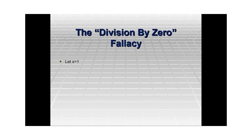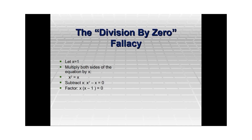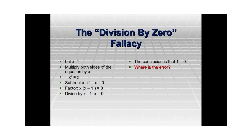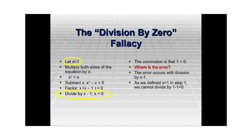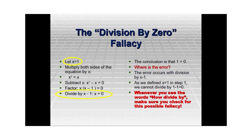Let us begin by taking x to be 1. Multiply both sides by x to get x² = x. Now subtract: x² minus x equals 0. Factorizing, we get x(x − 1) = 0. Now divide by x − 1 to get x = 0. This leads to the conclusion that 1 is equal to 0. Where is the error? We started with x = 1, which means x − 1 = 0, and somewhere along the lines we are dividing by x − 1. But x equals 1, so we are dividing by 0, and division by 0 is not allowed. That is the reason whenever you see the words 'now divide by,' please make sure you check for this possible fallacy. Division by 0 is the most common fallacy in mathematics.